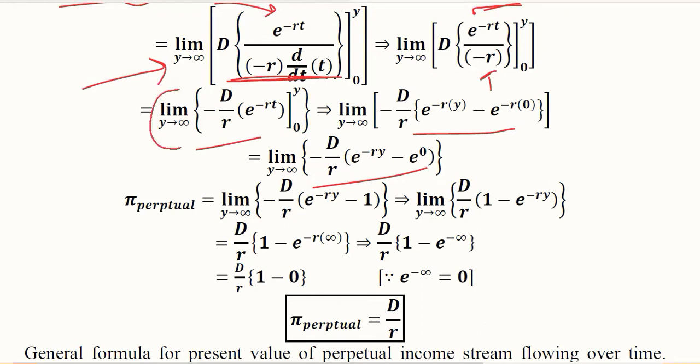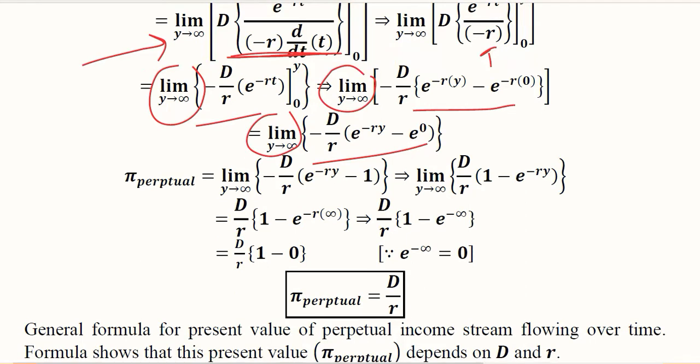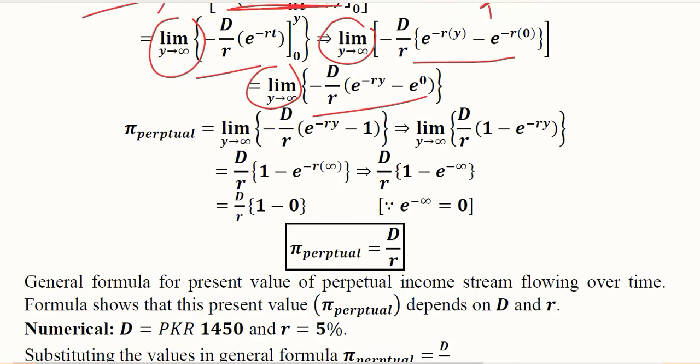However, the limit with the infinity sign remains outside and will be used as we go ahead. So we are talking about the present value of the perpetual flow and in that we have this limit outside still, and the remaining steps are being done here.